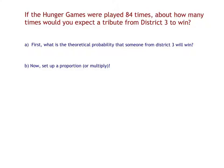If the Hunger Games were played 84 times, about how many times would you expect a tribute from District 3 to win? First, what is the theoretical probability that someone from District 3 will win? And then let's set up a proportion or multiply to answer the question. We know from the Hunger Games that there are 12 districts and each district has two people. So that is a total of 24 tributes for our possible outcomes. And so District 3 is sending two people. So there are two people from District 3 out of the 24 tributes. So we're going to say we have a 2 out of 24 probability or that's 1 12th. Let's turn it into, is it a nice decimal? No. We'll just keep it as 1 12th. So we have a 1 12th chance that someone from District 3 will win.